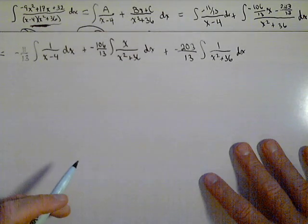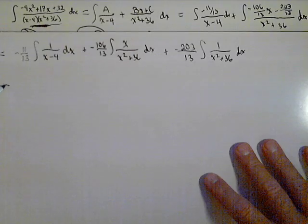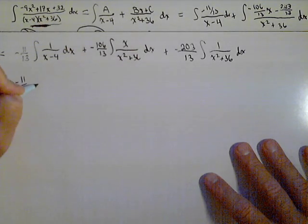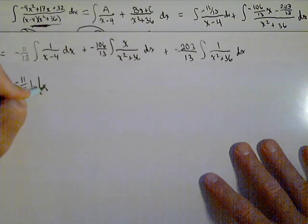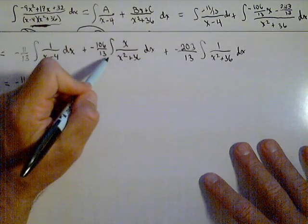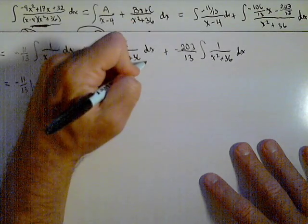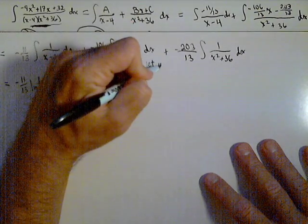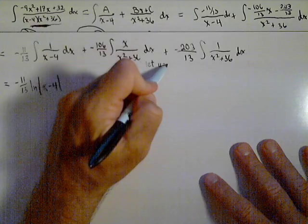The constants are messy, but these integrals are not bad. This first one, we have negative 11 over 13 ln of the absolute value of x minus 4. This next one will be a U sub. We're gonna let U equal the denominator, x squared plus 36.